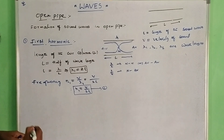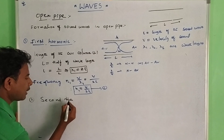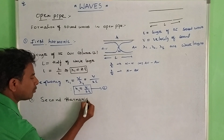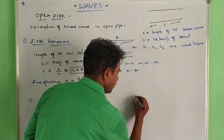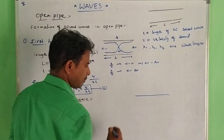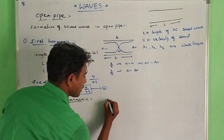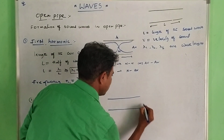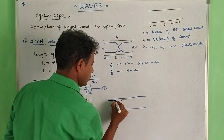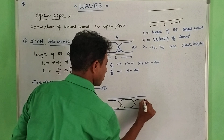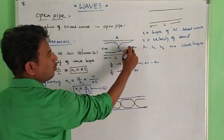Second harmonic: in a sound wave sent into a pipe of uniform area of cross section, the formation in the first harmonic has two antinodes and one node. In the second harmonic, three antinodes and two nodes are formed alternately.